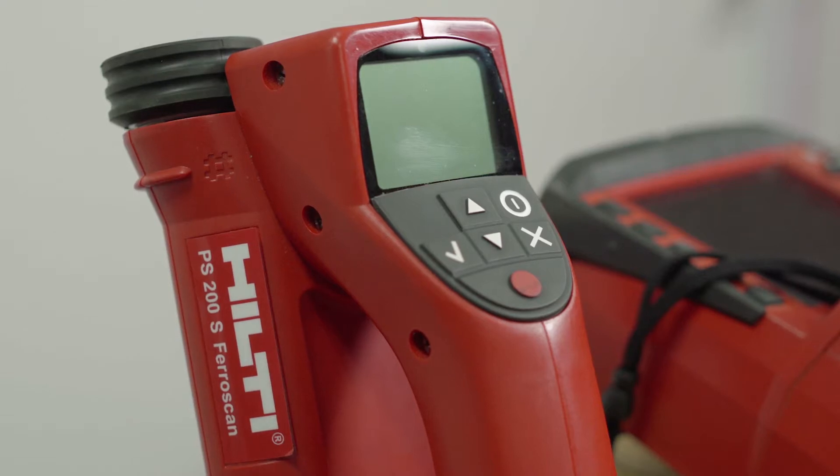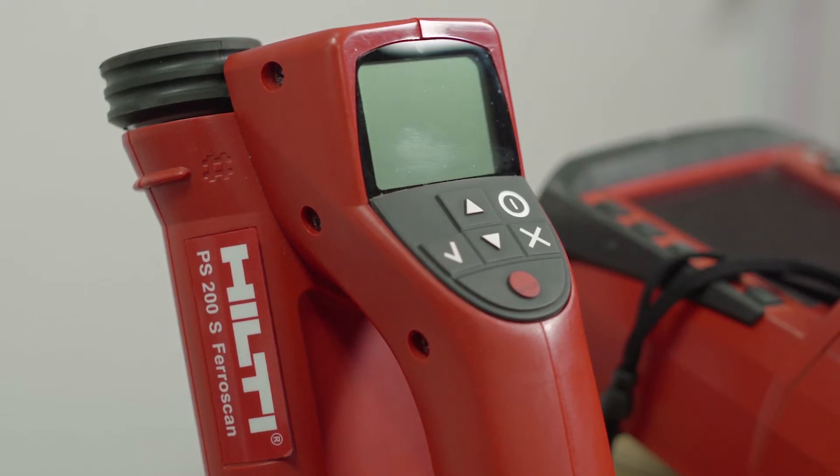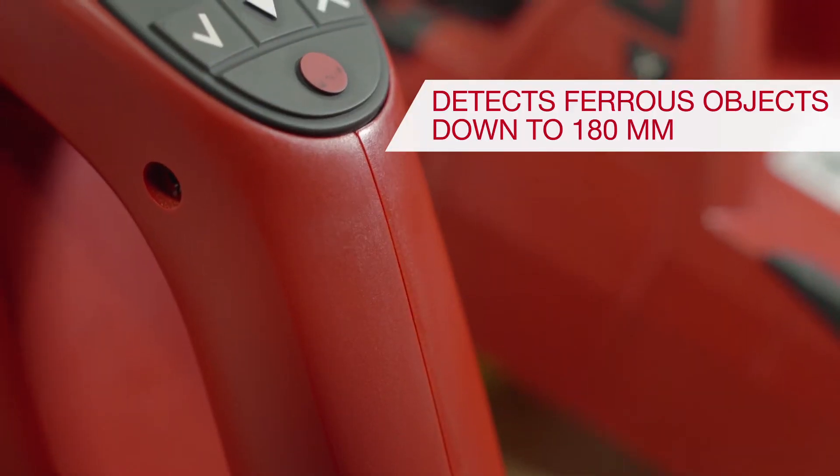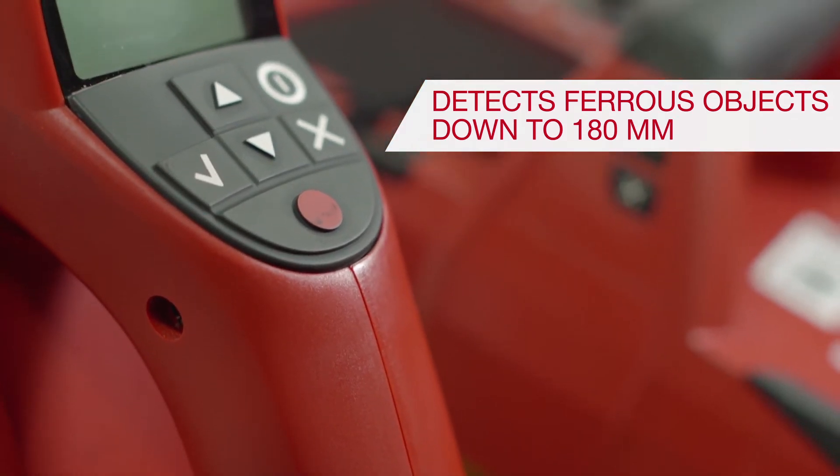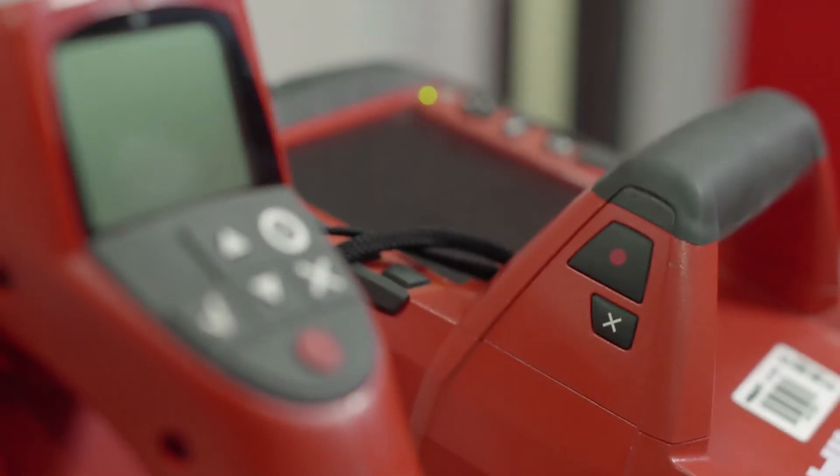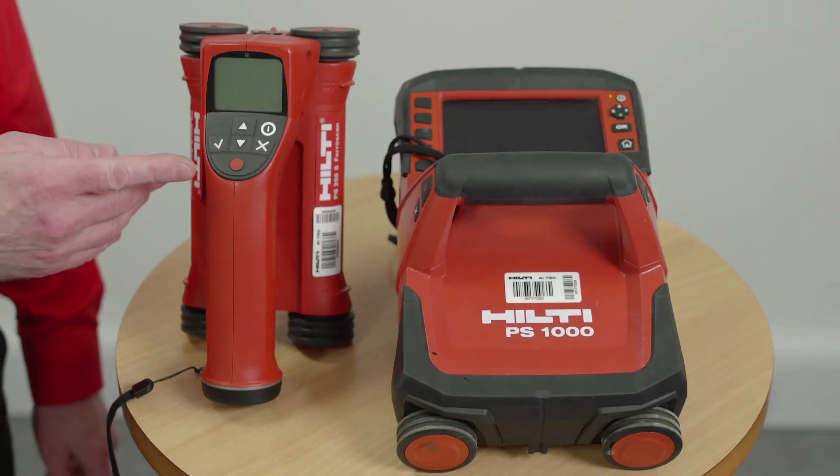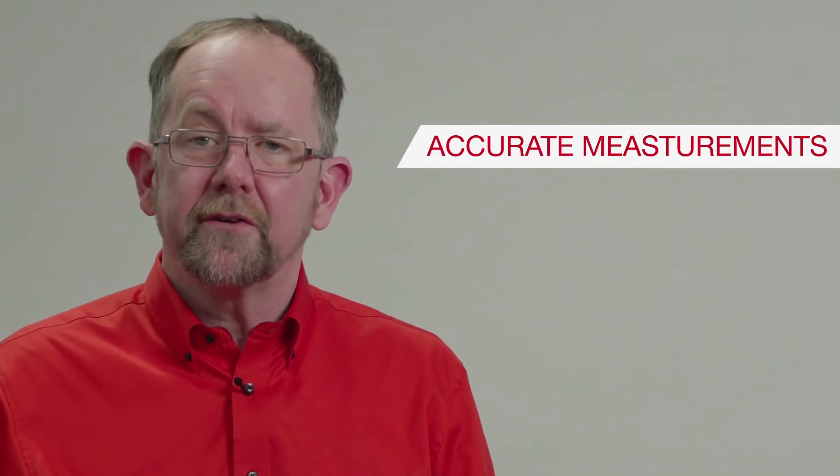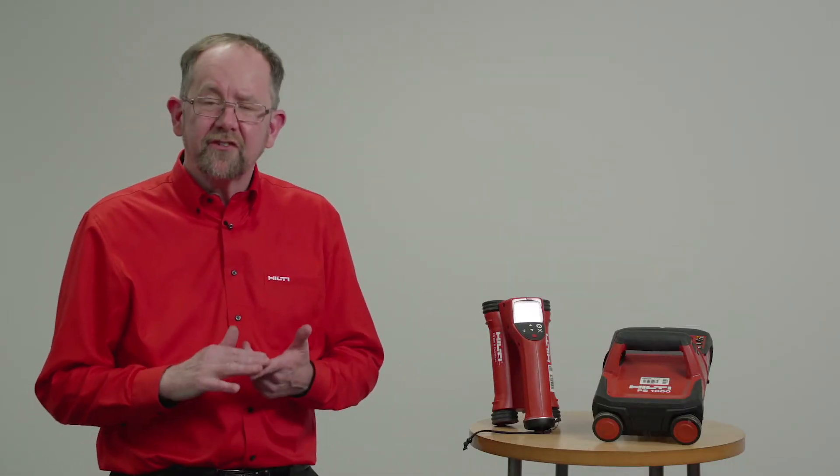The Hilti PS 250 works on the electromagnetic induction principle. It's able to detect ferrous objects down to 180 millimeters within concrete. Customers who are interested in using this type of equipment will be those who require accurate measurements of embedded ferrous objects within concrete. So this would be your structural engineers, inspection engineers, test houses, diamond drillers, people who require accurate information.